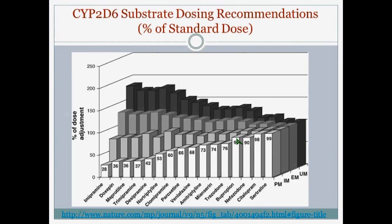This is another view of the chart. The white bars represent poor metabolizers, then intermediate, then extensive, and the very back is ultrarapid. Poor metabolizers generally require a lower dose, and ultrarapid metabolizers require a higher dose compared to a normal metabolizer.